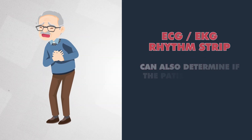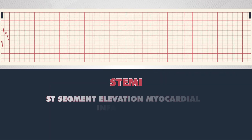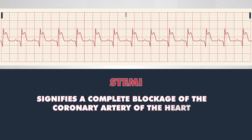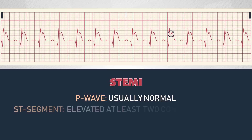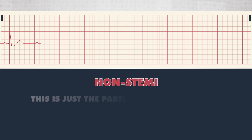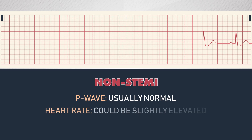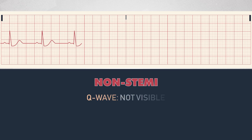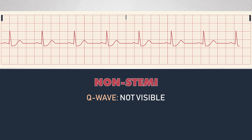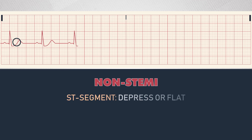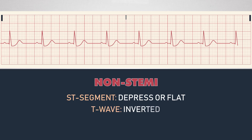The rhythm strip can also determine if the patient is having a myocardial infarction, or heart attack. This is known as a STEMI — ST segment elevation myocardial infarction — which signifies a complete blockage of the coronary artery of the heart. P waves are usually normal, but the ST segment is elevated. A non-STEMI points to a partial blockage of the coronary artery. P waves are usually normal, the heart rate could be slightly elevated or normal, and there are typically no pathological Q waves as the infarct is smaller. It may require further lab investigation to diagnose and treat properly. The ST segment is depressed or flat with T wave inversions indicating ongoing ischemia.